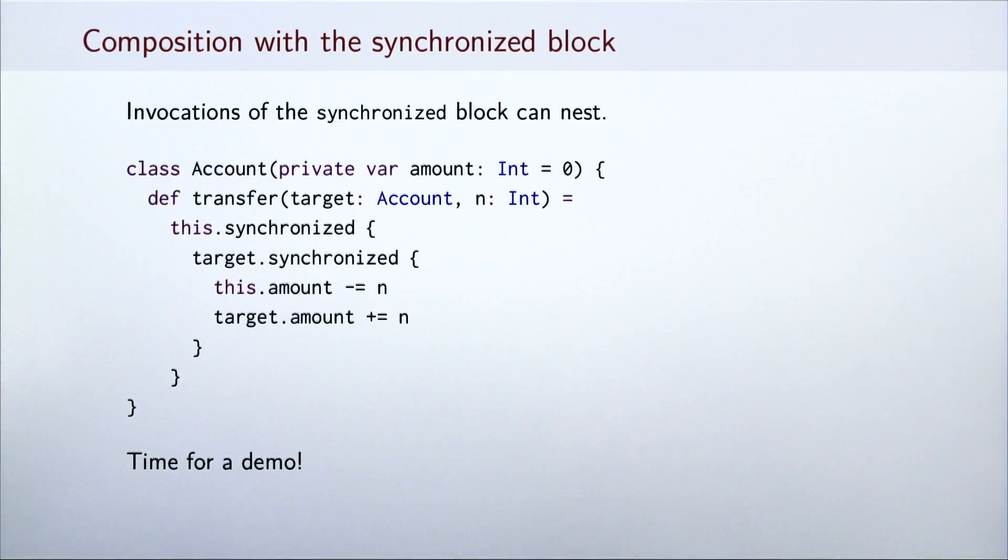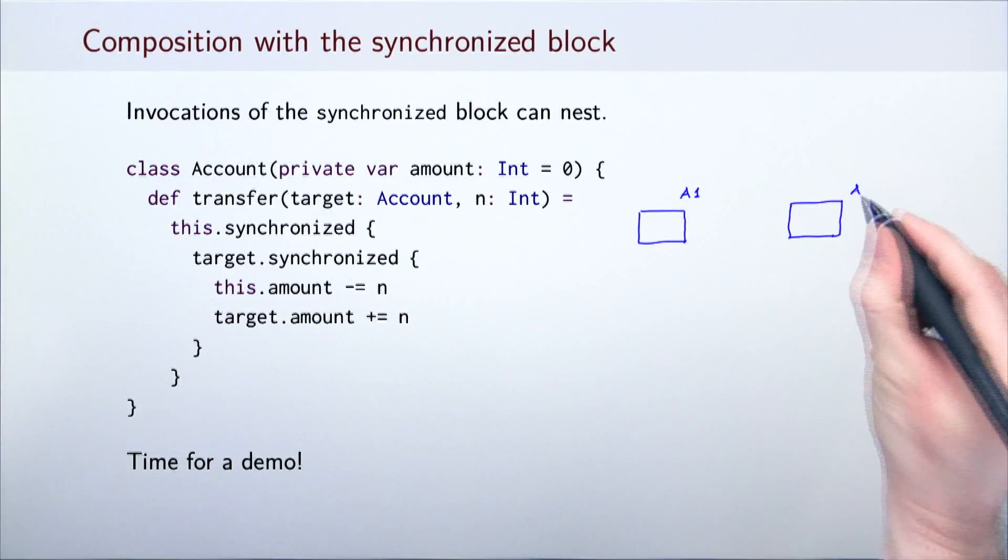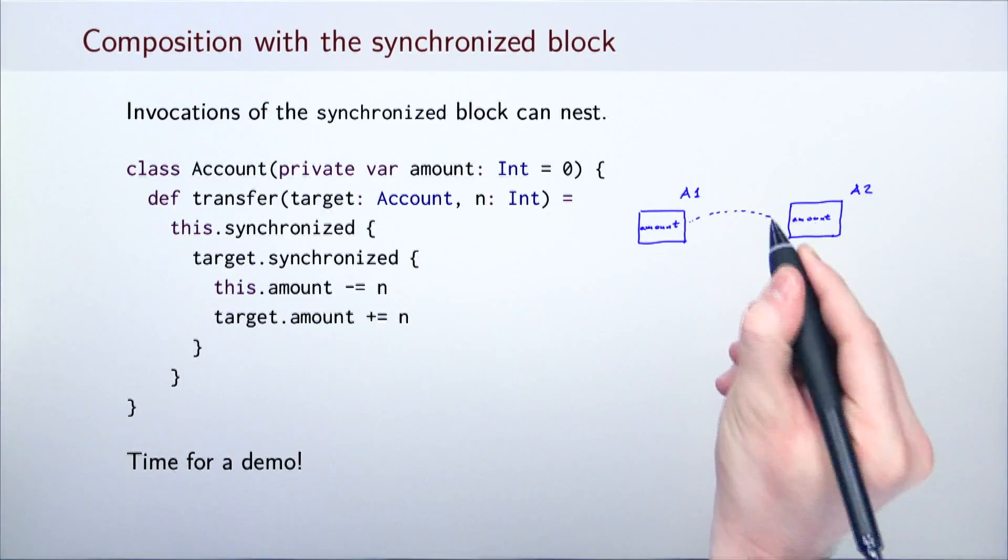Assume that we have a class account that represents bank accounts. Each account is initialized with a certain amount of money. This amount is stored in a private variable. The account class has a method transfer, which is used to transfer some amount n to a target account. Note that many invocations of transfer could occur in parallel.